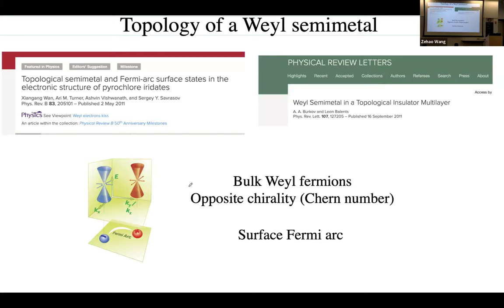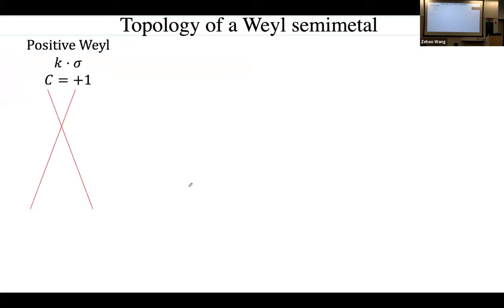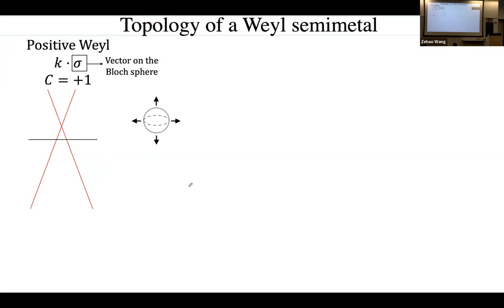How do we visualize this? Consider the k·σ Hamiltonian. The σ here is precisely the pseudospin unit vector on the Bloch sphere I described. Because of the k·σ form, the unit vector points in the same direction as k, measured from the Weyl point as origin. So if I choose a Fermi surface sphere around the Weyl point, the wavefunction unit vectors point radially outward — like a monopole.